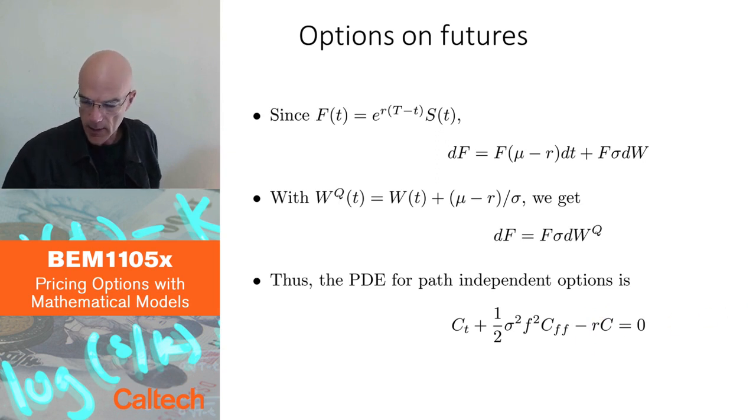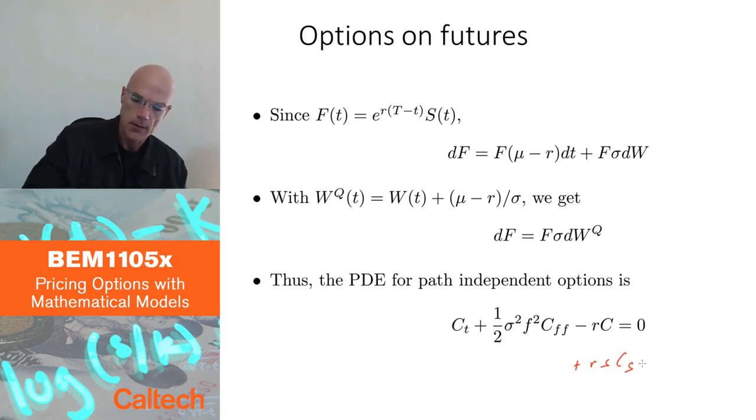This is almost the same as the Black-Scholes partial differential equation, except in Black-Scholes we also had a term plus r times c_s. We had a delta term with the first derivative, but that came from the drift of s in the Black-Scholes model being equal to r times s. But now the drift is zero for the futures, so this term will not be there.